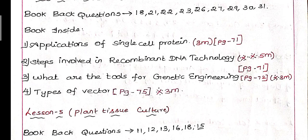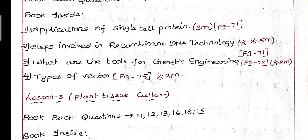Next, what are the tools for genetic engineering: DNA ligase, restriction endonuclease, definition and types, 3 mark question important, page number 72. Next, fourth question: Types of vector, plasmid vector type, plasmid, pBR322, 3 mark question, page number 75.